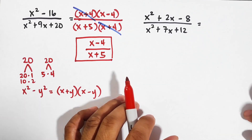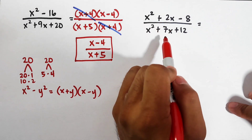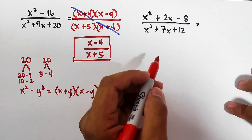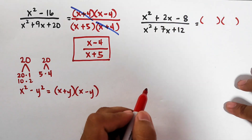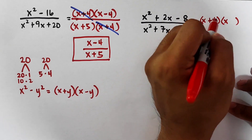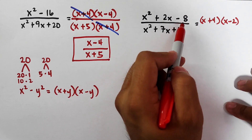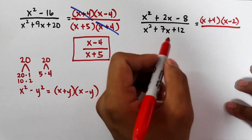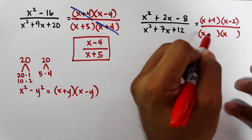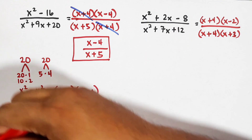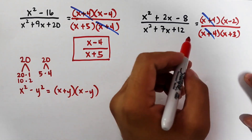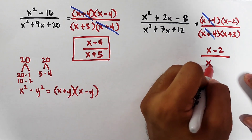Let's move on to example number 4. The numerator and denominator are both trinomials: x squared plus 2x minus 8 over x squared plus 7x plus 12. For the numerator, factors of negative 8 that add to 2 are plus 4 and minus 2, giving x plus 4 times x minus 2. For the denominator, factors of 12 that add to 7 are plus 4 and plus 3, giving x plus 4 times x plus 3. Canceling x plus 4 leaves the simplified expression x minus 2 over x plus 3.